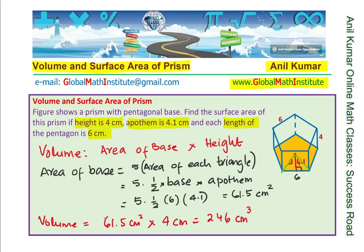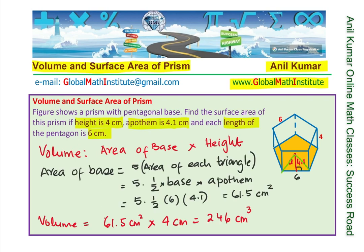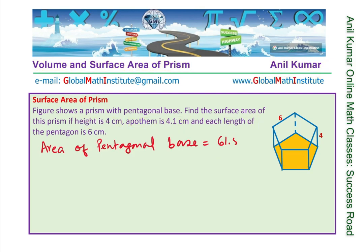Now let's find the surface area of this prism. The area of the base we just calculated is 61.5 cm². Since we knew the apothem was 4.1, we found area of the base using half base times height: base was 6, height 4.1.